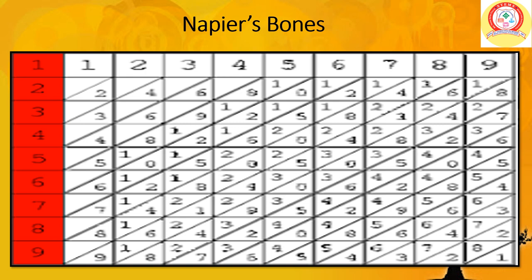In 1616, Sir John Napier made a calculating device and named it Napier's Bones. This device was called Napier's Bones because it has numbers carved on bones or on strips of wood. Napier's Bones were used for addition, subtraction, multiplication, division, and to find the square roots of numbers.